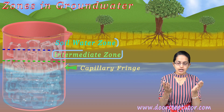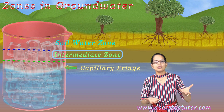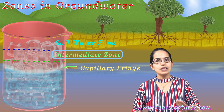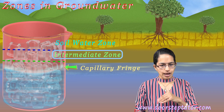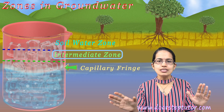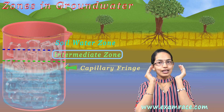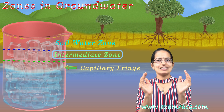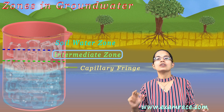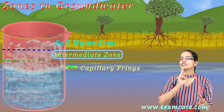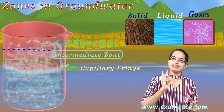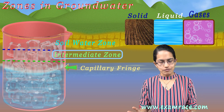We also have an intermediate zone — a transition zone between the soil water zone and the capillary fringe. So this is a very fundamental categorization of the unsaturated zone, which is present in three phases: solid, liquid, and gaseous phase. The saturated zone has just two phases: solid and liquid.